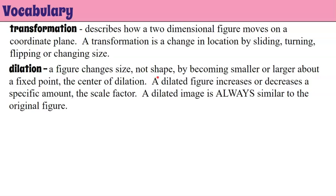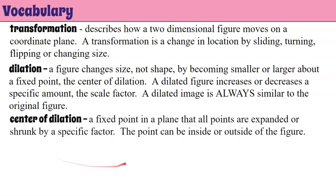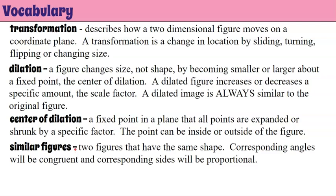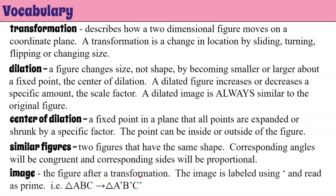A figure changes size, not shape, by becoming smaller or larger about a fixed point called the center of dilation. A dilated figure increases or decreases a specific amount — the scale factor. A dilated image is always similar to the original figure. The center of dilation is a fixed point in a plane that all points are expanded or shrunk by a specific factor; the point can be inside or outside of the figure. Similar figures have the same shape, congruent corresponding angles, and proportional corresponding sides. An image is the figure after transformation, labeled using an apostrophe read as 'prime.' For example, triangle ABC transforms to triangle A prime B prime C prime.